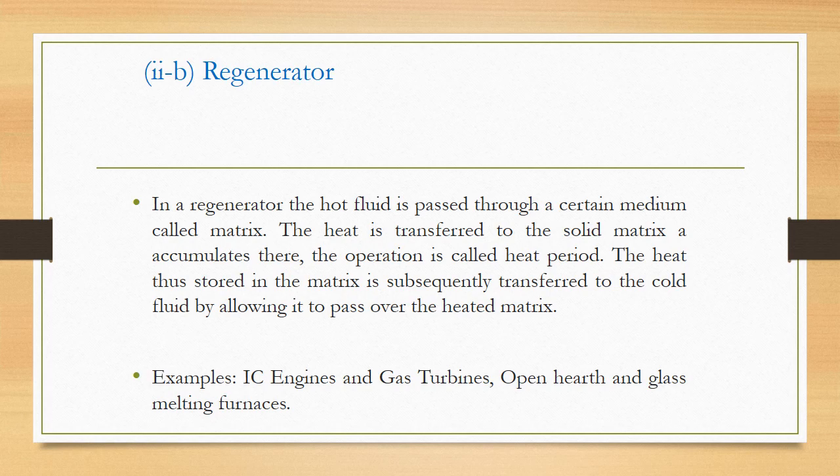The next indirect contact type is the regenerator. In a regenerator, the hot fluid is passed through a certain medium called a matrix, and the heat is transferred to the solid matrix where it accumulates — this is called the heat period. The stored heat is then transferred to the cold fluid by allowing it to pass over the heated matrix. Examples are IC engines, gas turbines, open hearth, and glass melting furnaces.